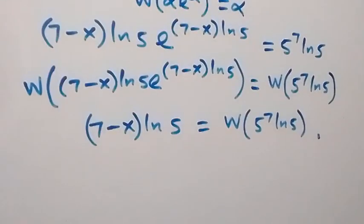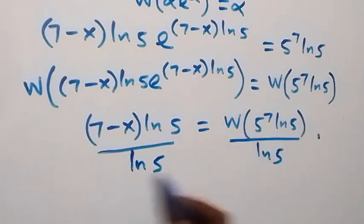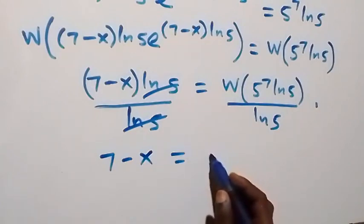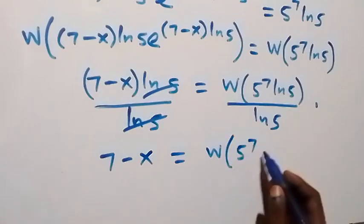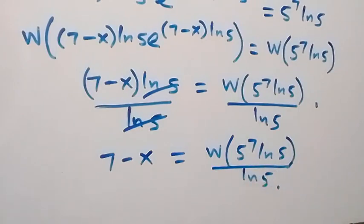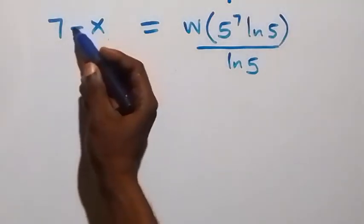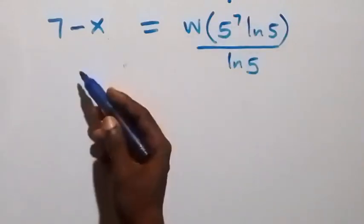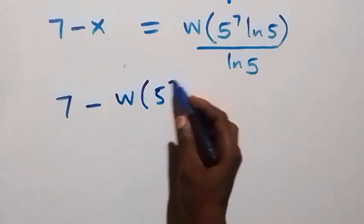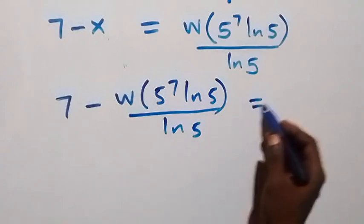Then divide both sides by ln 5. The ln 5 cancels on the left, which gives us 7 minus X equals W of [5 raised to power 7 × ln 5] over ln 5. Since we are finding X, taking minus X to the other side gives us 7 minus W([5^7 × ln 5] / ln 5) equals X.